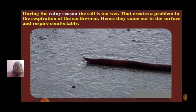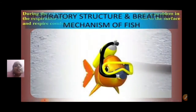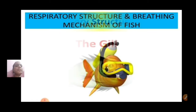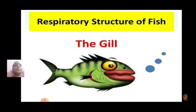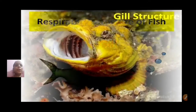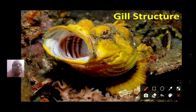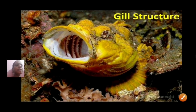During rainy season, the soil is too wet, which creates a problem in the respiration of earthworms. So they come out to the surface so that they can respire comfortably. Talking of the respiratory structure and breathing mechanism of fish — the respiratory structure of fish is the gill, as we all know. This is the structure of the gill; you can see these are the gills.